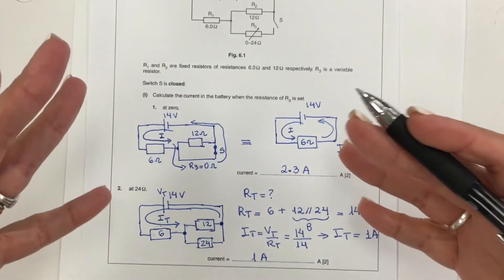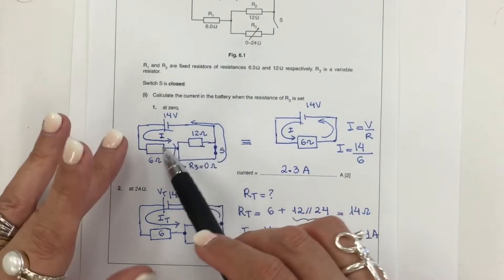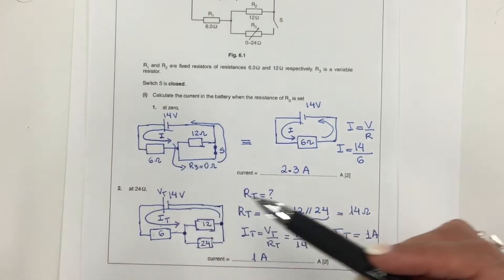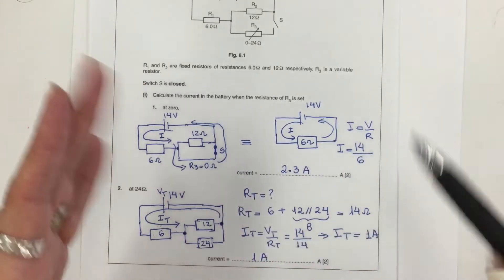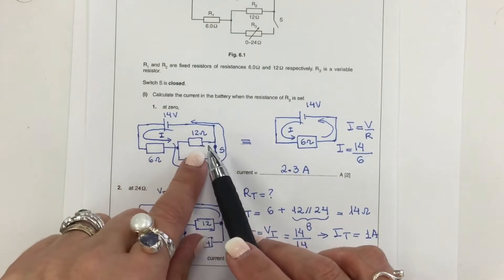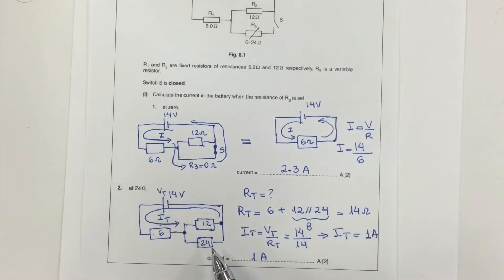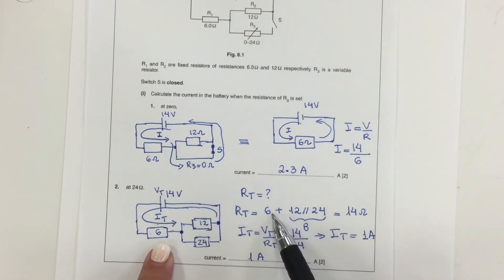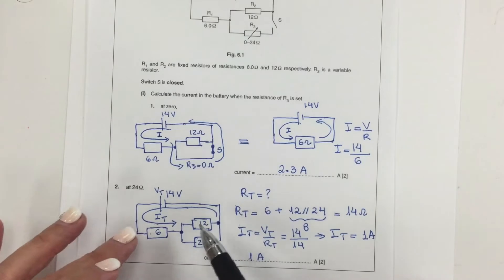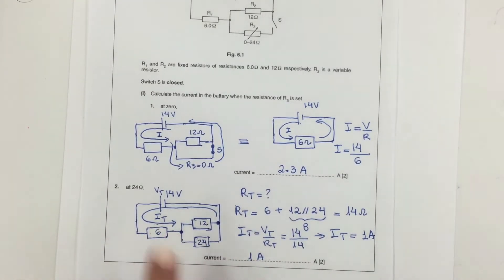To recap: when the switch was closed and R3 was set at zero, the current only flowed through the 6-ohm loop, giving 2.3 amps. In the second scenario, when R3 was set at 24 ohms, we had two resistors in parallel in series with the 6-ohm resistor, and the total current from the battery before the junction was 1 amp.